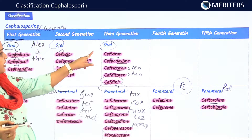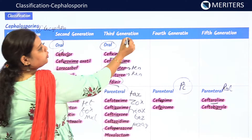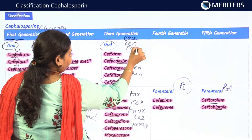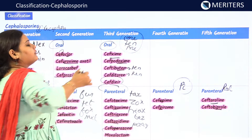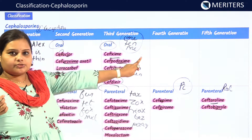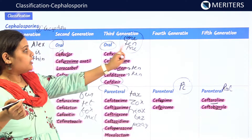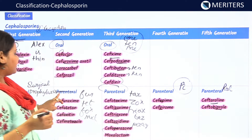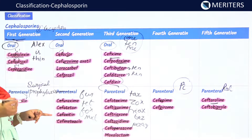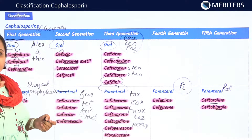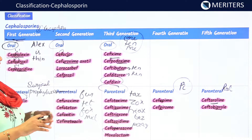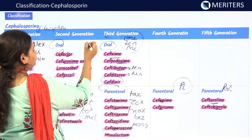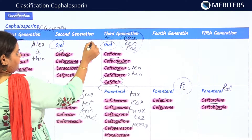For third generation, look for suffixes: 'one,' 'ten,' and 'me' — all three are clues to identify third generation drugs. There is one exception here too: cefuroxime, which is second generation. So all the exceptions belong to the second generation — just remember that.